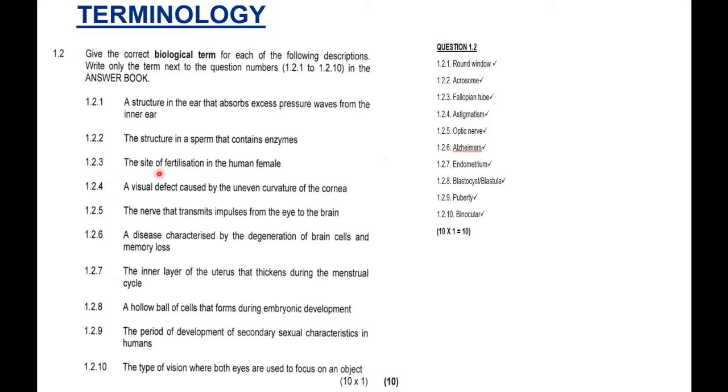1.2.3: The site of fertilization in the human female. So, where does fertilization take place in the human female? It takes place in the fallopian tube. You can use the word oviduct. Oviduct is quite an older word. So, let's get used to using the fallopian tube. 1.2.4: A visual defect caused by the uneven curvature of the cornea. And this also, these first four questions, have come out a lot. So, again, don't go into your exam without knowing this. Uneven curvature of the cornea. That is astigmatism.